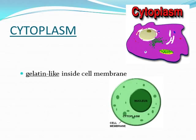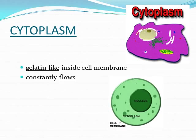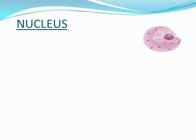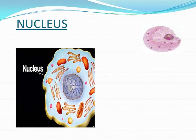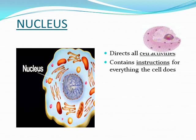Cytoplasm is the matter inside the cell membrane in which all the cell organelles are suspended. The nucleus is also known as the brain of the cell — it controls all the activities of the cell.